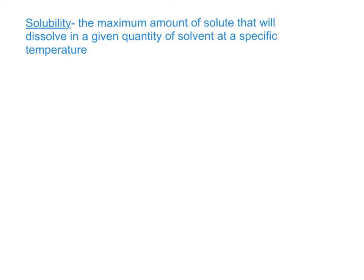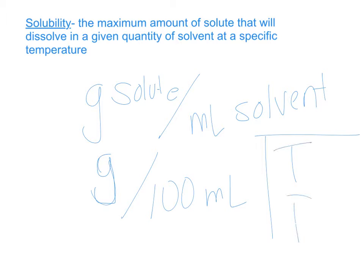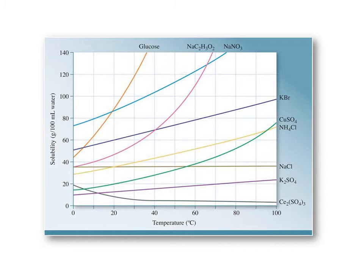We typically talk about solubility in terms of the grams of solute per volume of solvent. Most of the solutions we work with are water-based, specifically the amount of solute that goes into 100 milliliters of water. The two factors we're going to talk about are temperature and pressure.